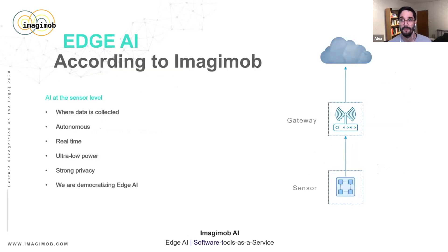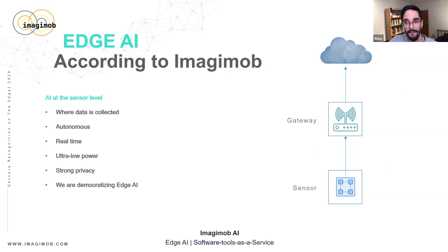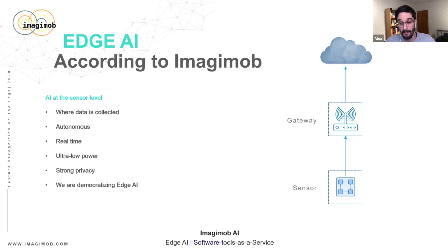Our definition of Edge AI at Imagimob is all about pushing the AI model as far away from the cloud as possible. We're not talking about running the application in the cloud, and we're also not talking about running it in a gateway between the cloud and the edge device. We are putting the AI application right on the edge device, right next to the sensor which is generating the data, because we believe you can build completely new applications with lots of interesting attributes.